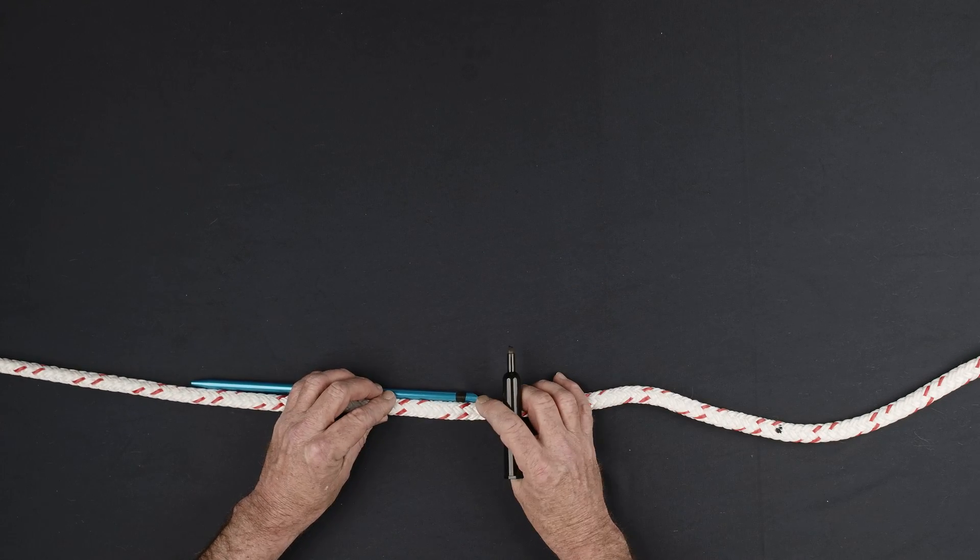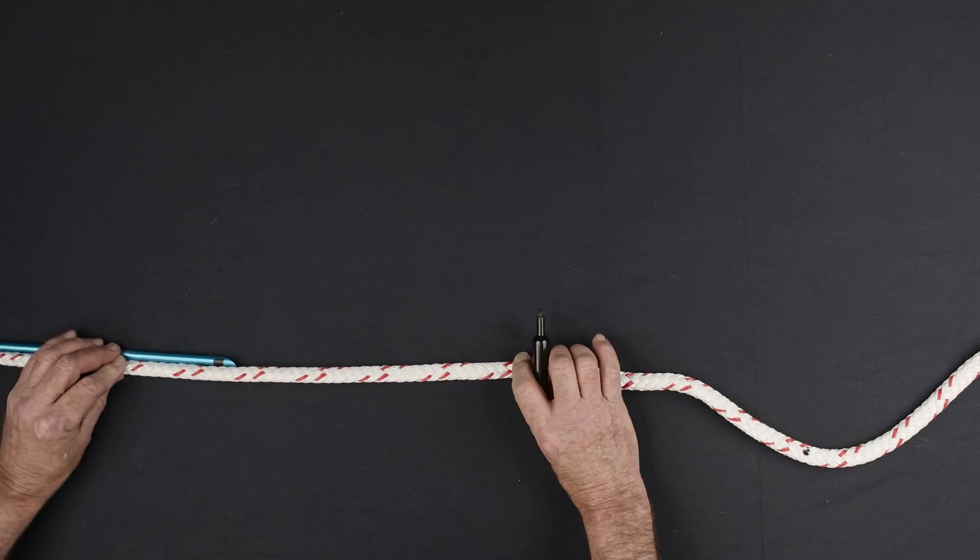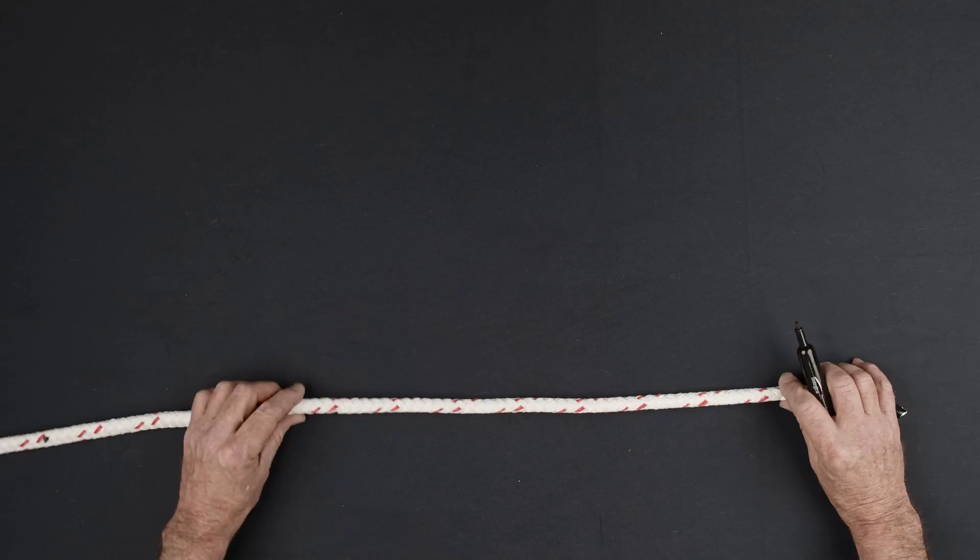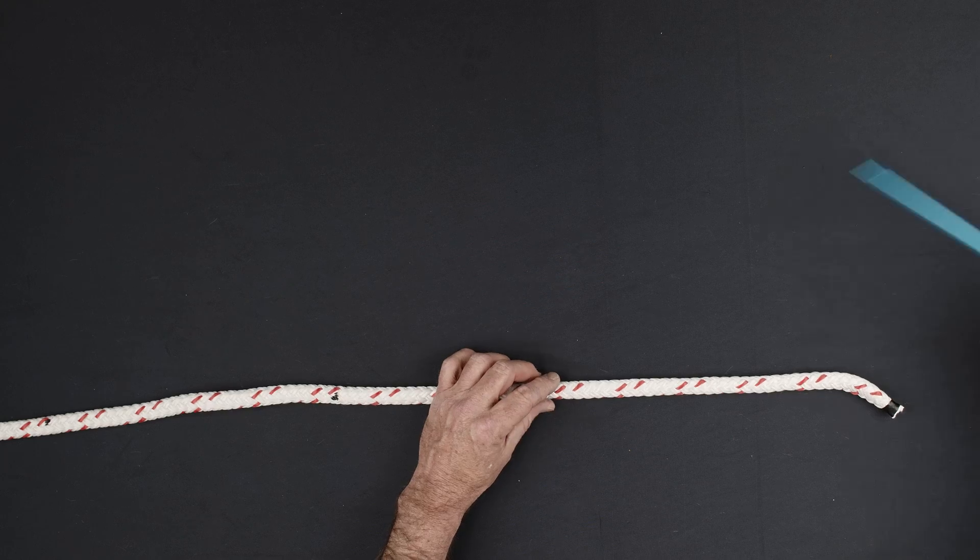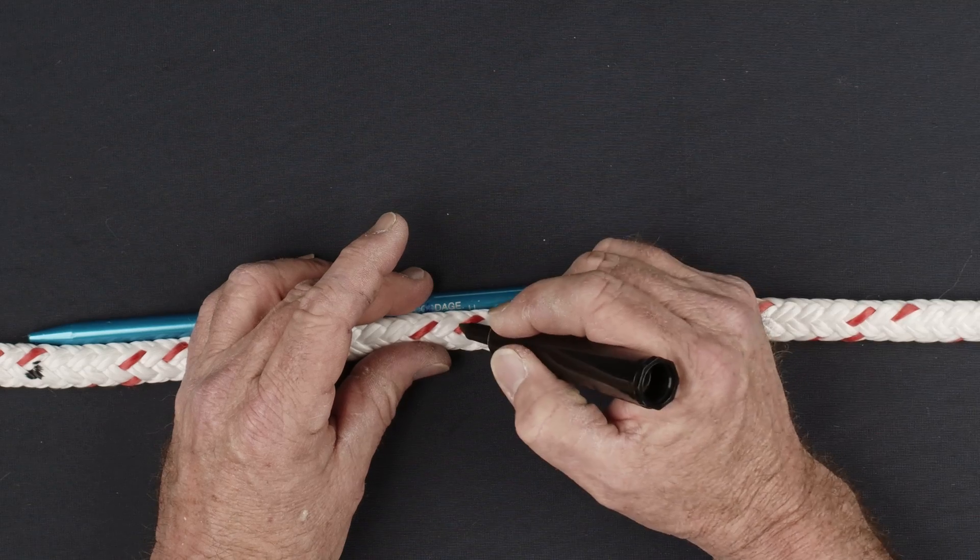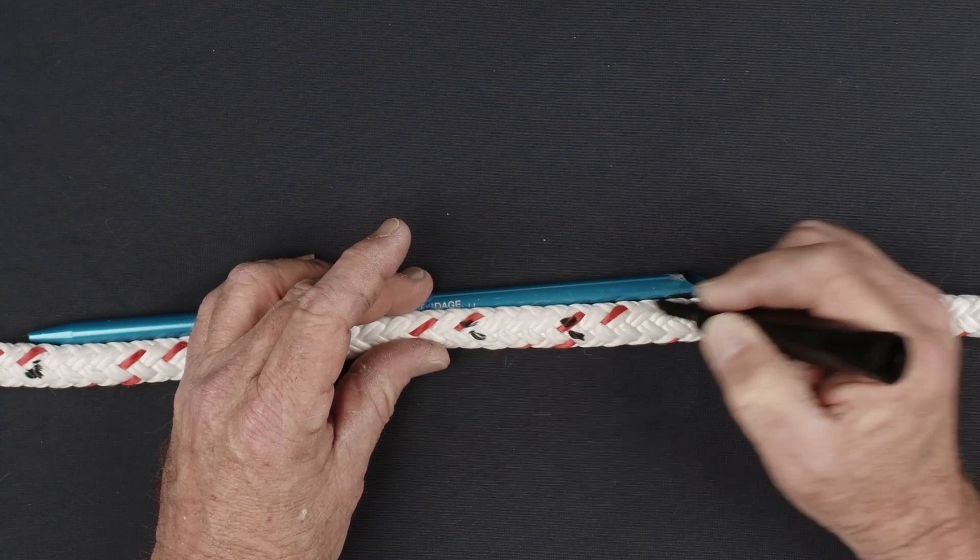Measure one and one short fid lengths from the second eye mark to make your exit mark. Measure one and one short fid length from the end of the rope and begin making your taper pattern. Mark the first and fourth strand pair and a single end from the ninth strand pair.